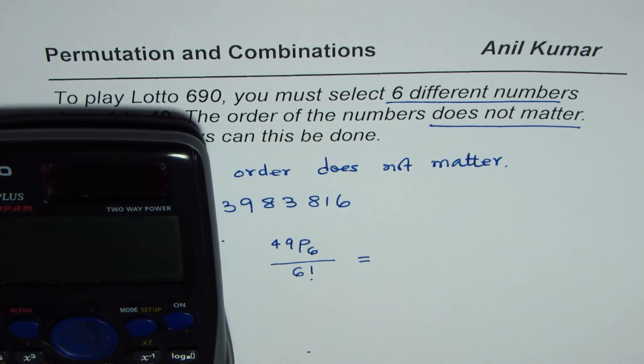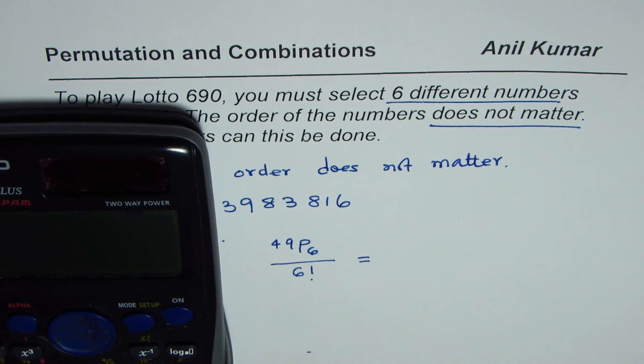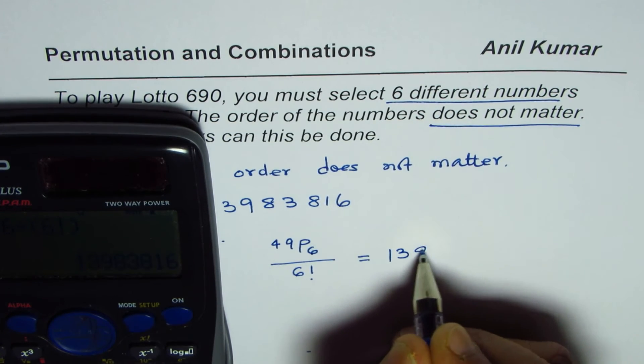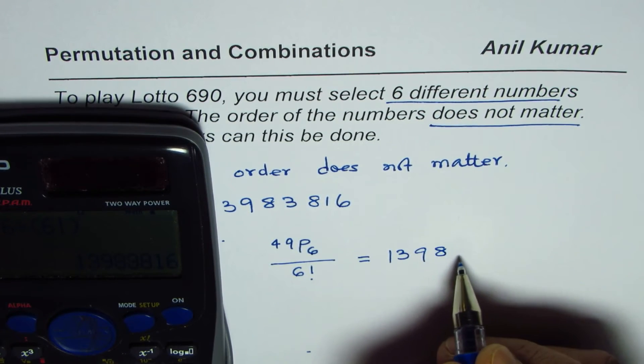Let's calculate this answer. So we have 49P6 divided by 6 factorial. 6 factorial equals to 13,983,816.